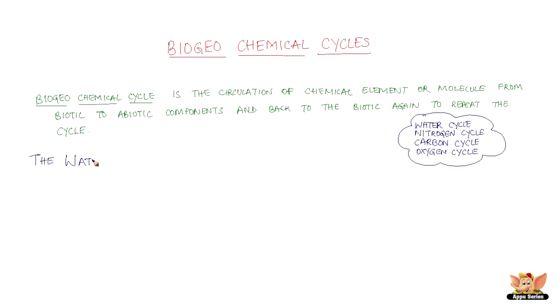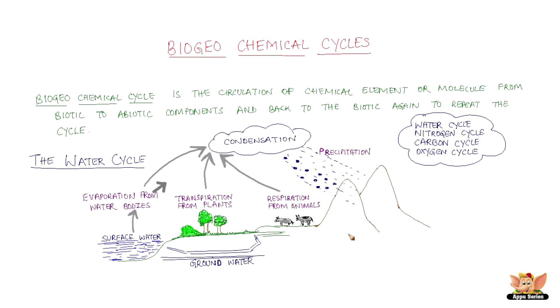Let's look at the water cycle now. The water from water bodies like rivers, seas, or oceans evaporates to form clouds. Transpiration from plants and respiration from animals also adds to the water vapor for condensation to form clouds. When the water in the clouds is heavy enough, it precipitates onto the land in different forms like rain or snow. Some part of this rainwater seeps into the land forming groundwater, and the rest joins the water body. The cycle repeats from evaporation to condensation to precipitation.